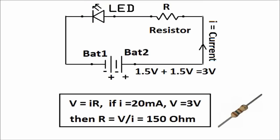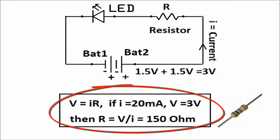The value of this R depends on the current flow. A LED generally takes 5 milliampere to 20 milliampere. So if you apply Ohm's law, V = IR, then with V = 3 volts you can calculate R = V/i = 150 ohms.